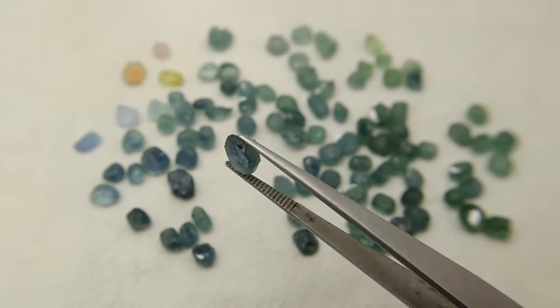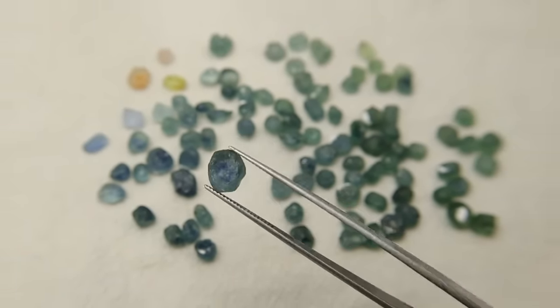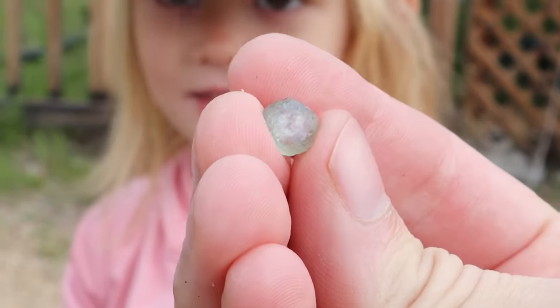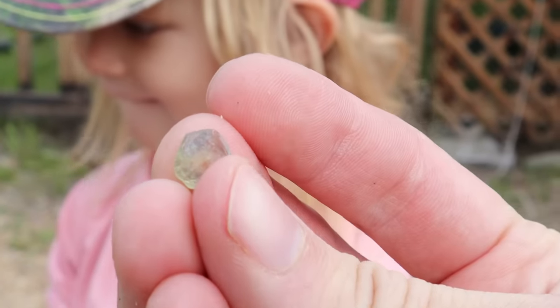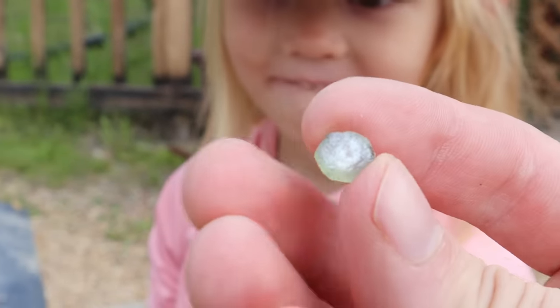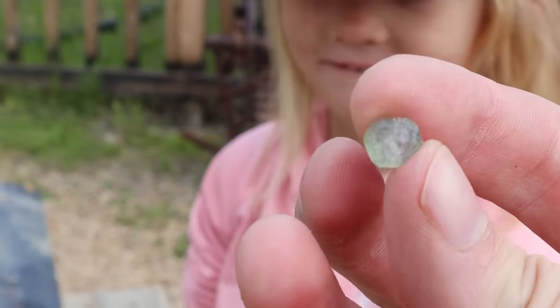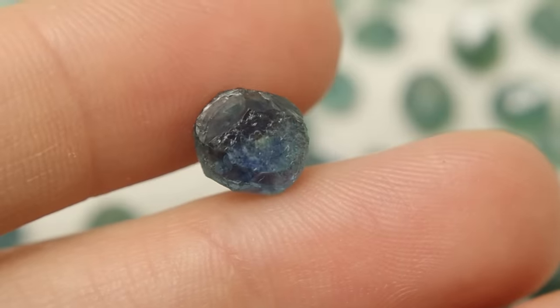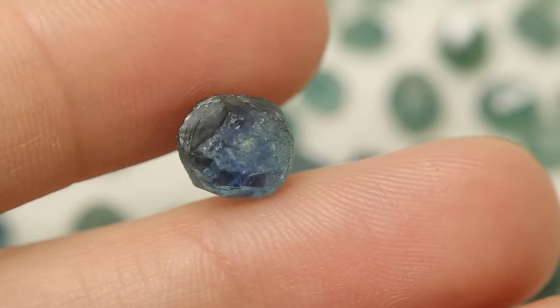This 3 carat rough piece is the largest one that we found at Gem Mountain and left to be heat treated. It is the piece that my daughter found in some gravel we were letting her go through. It was a lighter bluish green shade and heated to a teal color with some darker blue color zoning towards the center. Anyway, this is the piece that I will be cutting.